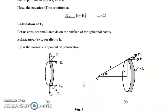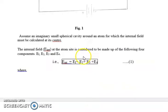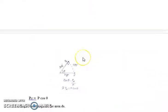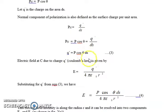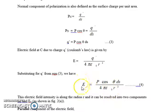The distance here is r. So E is nothing but Q' / (4πε₀r²). Now, instead of Q', let us substitute from equation 3. So E = P cosθ · dS / (4πε₀r²). This is the electric field intensity due to the charge on area dS.